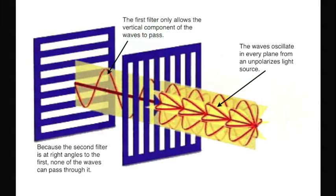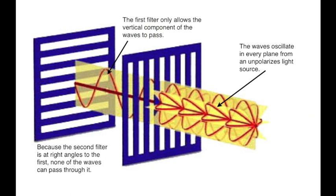If the second filter is aligned at right angles to the first, in this case horizontally, because it is at right angles, none of the waves can pass through it. Therefore, the image that you see looking through the second filter is black.